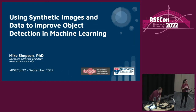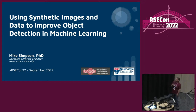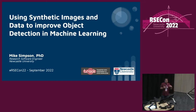Mike Simpson is going to talk about using synthetic data to improve object detection in machine learning. Machine learning is obviously a very useful and powerful tool, but one of the major bottlenecks is the availability of training data — either the data isn't available, or you have to annotate it, which is a long, tedious process prone to human error. What if you could generate that data artificially? The question is: does it work, and can it produce practical results?